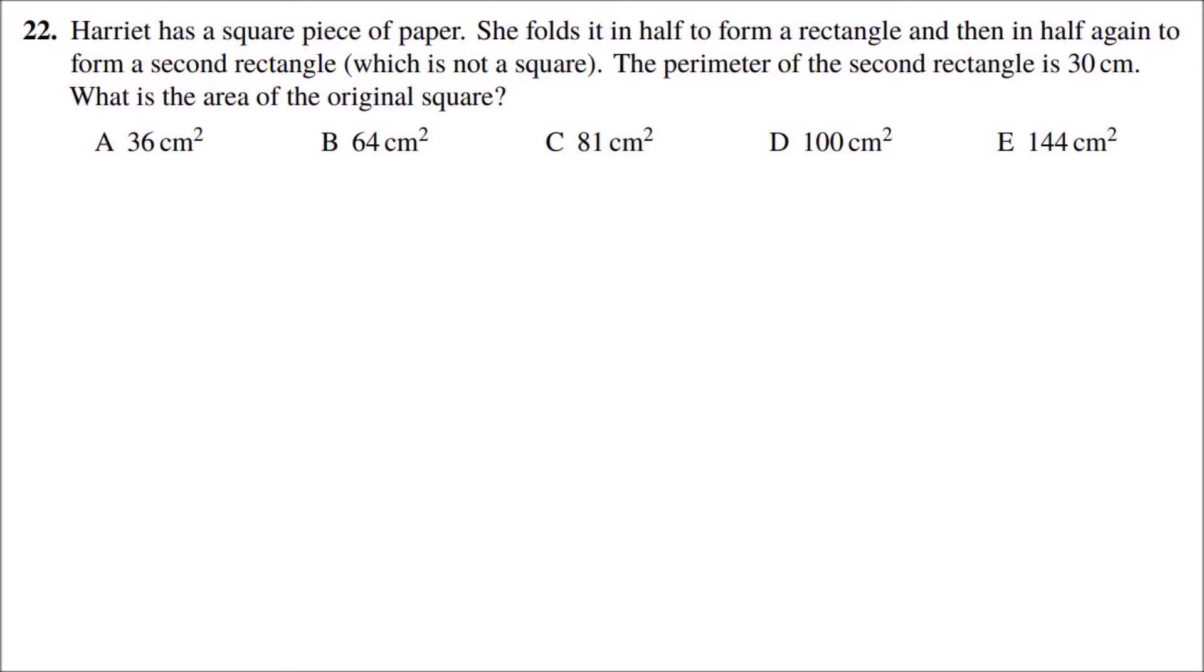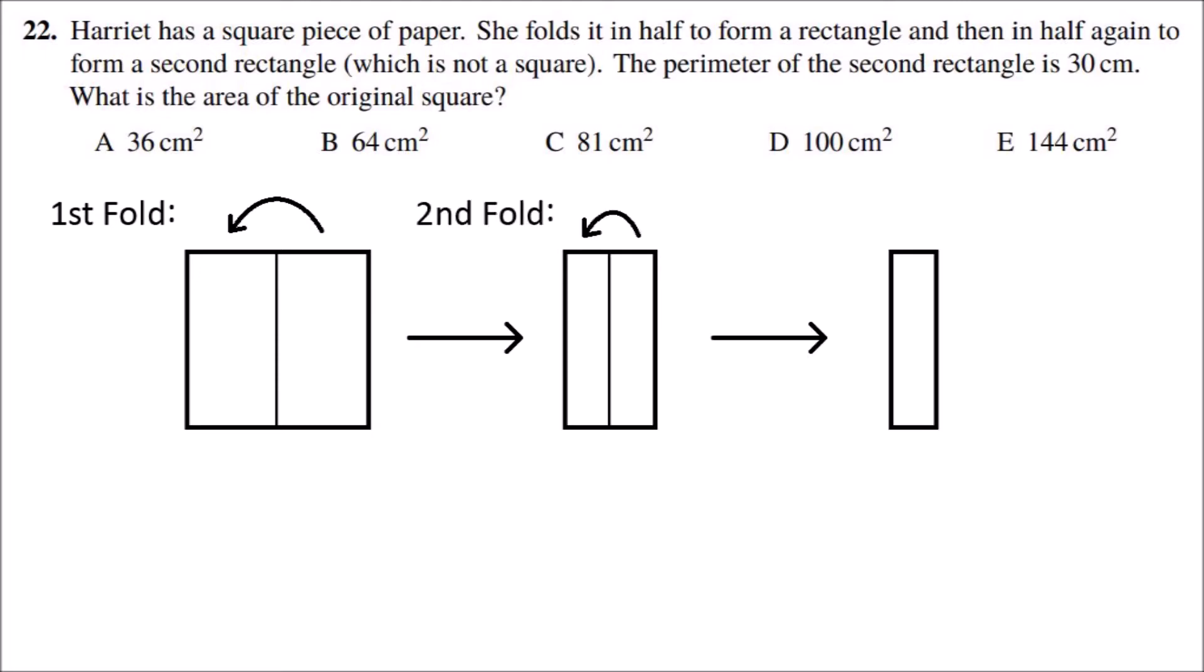To solve this question, if we first consider how she folds the piece of paper, the first fold will half the length of two of the sides, and the second fold will half the length of those two sides again. Because if you half the lengths of the other two sides, then it would make a square. So two of the sides of the second rectangle would be a quarter of the original square side length.